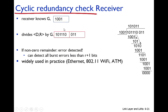When the receiver gets the data bits and R bits, it already knows G. It divides both D and R together by G using modulus-2. If the remainder is zero, there is no error. If the remainder is non-zero, an error is detected.